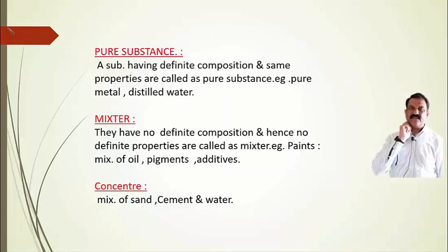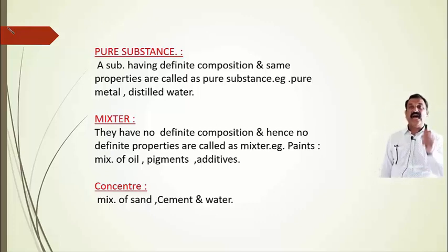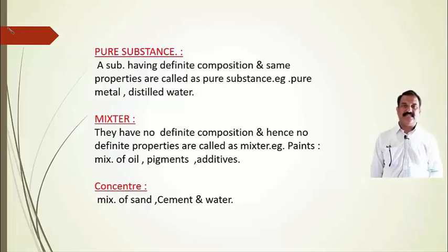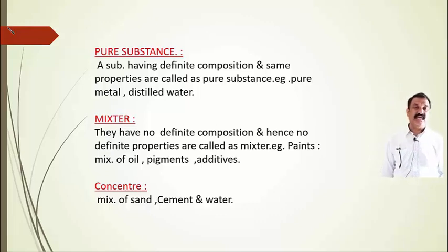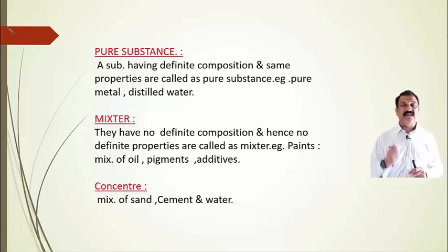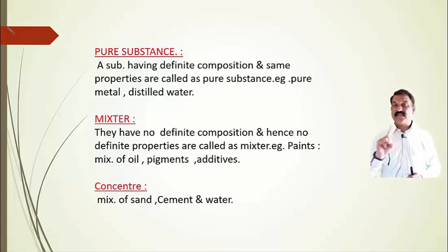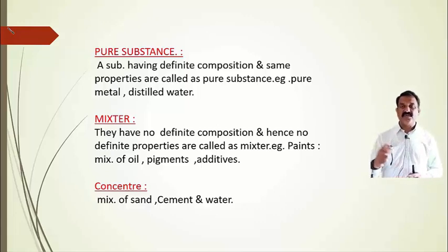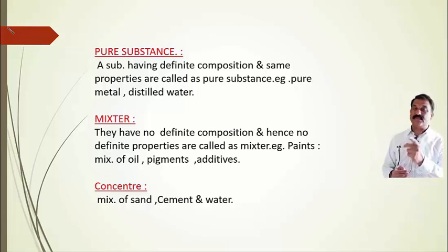A pure substance is a substance having a definite composition and the same properties throughout. For example, water has a definite composition — two hydrogen atoms and one oxygen atom — and uniform properties. Pure metals and distilled water are the best examples of pure substances.